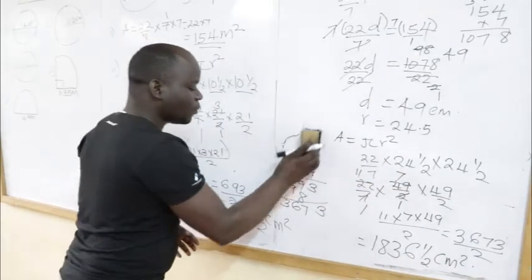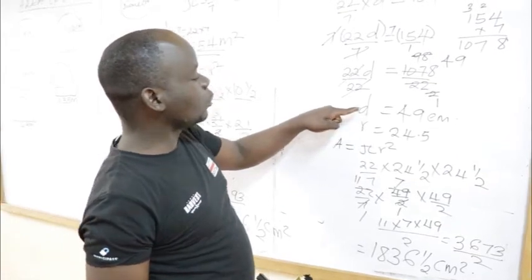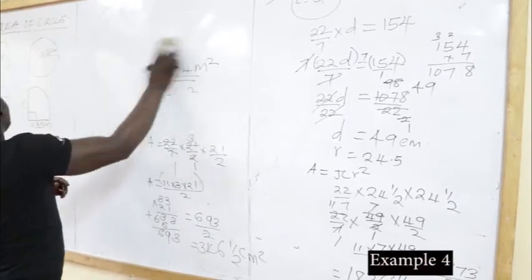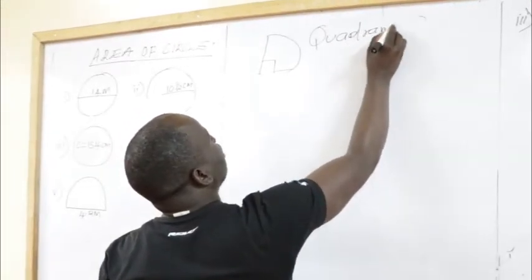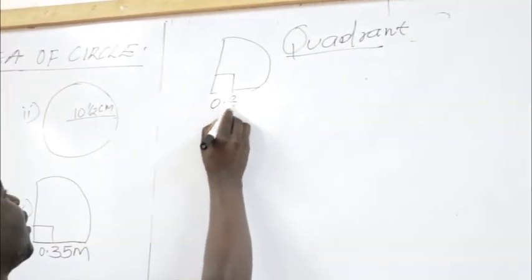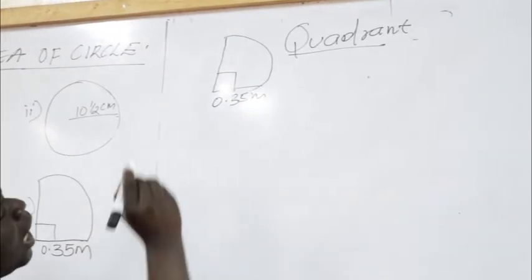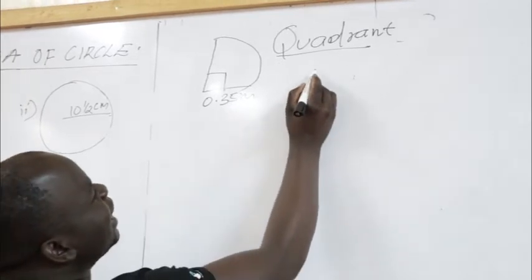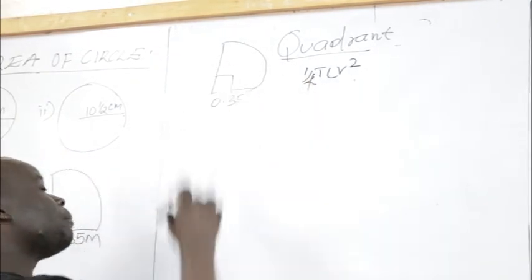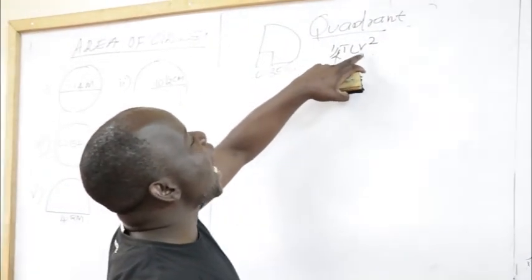Example number 4: a quadrant, or quarter circle. We are given a radius of 0.35 meters and must find the area. Because it is a quarter circle, we include the quarter factor. The formula becomes: Area = ¼ π r².